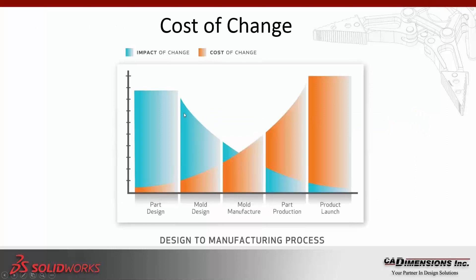This graph really shows a typical timeline of a product development for plastic parts. You design the part, design the mold, the mold is manufactured, production of the part, and then the product is launched. The orange graph signifies the cost involved when having to make changes to the part or the mold. At an early stage when the part is designed in SolidWorks, how much does it really cost to make changes? It's extremely low because everything is done virtually — you can make changes rapidly. SolidWorks is very good at revision control.